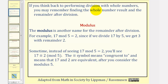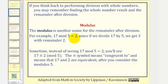If you think back to performing division with whole numbers, you may remember finding the whole number result and the remainder after division. The modulus is another name for the remainder after division. For example, 17 mod five equals two, since if we divide 17 by five, we get three with a remainder of two.